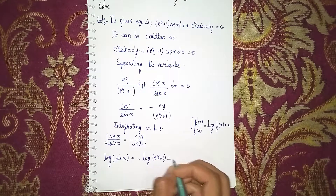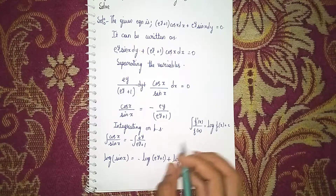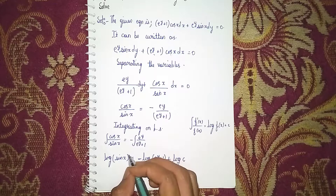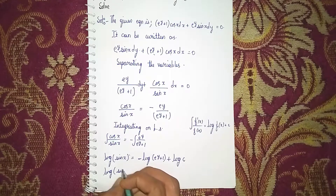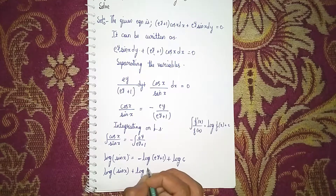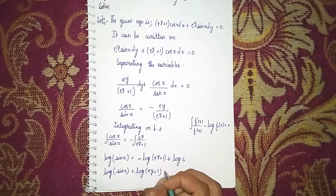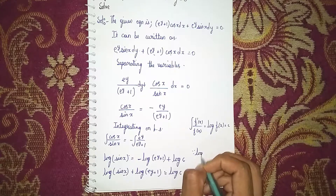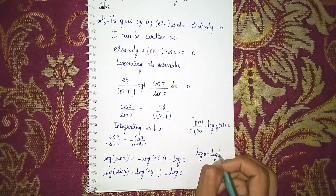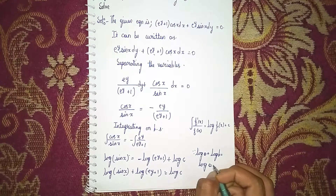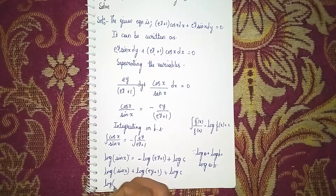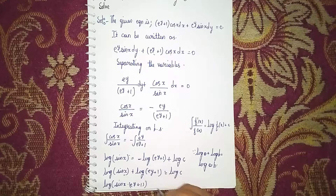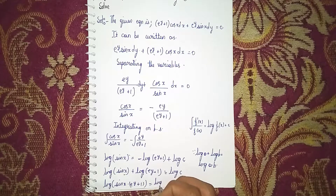Sending −log(e^y + 1) to the left side gives: log|sin x| + log|e^y + 1| = log c. Using the property log a + log b = log(ab), this becomes: log(sin x · (e^y + 1)) = log c.